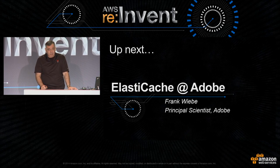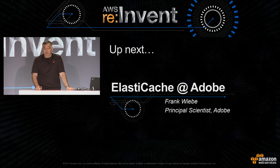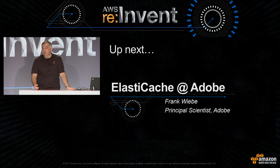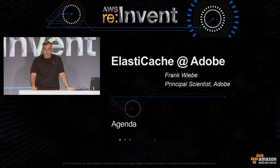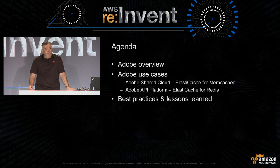Good afternoon, everyone. Thank you, Sammy. I'm Frank Wiebe — I'm a principal scientist with Adobe. I'm part of a devops team that has been developing and building an API management platform for about the last year or so. That will be one of the use cases we're going to talk about, and I'm also going to talk about another one within what we call our shared cloud, which is part of Creative Cloud. I'll quickly give everybody a brief overview of what Adobe is and what we do, and then jump into our two use cases — one each for Memcached and Redis.